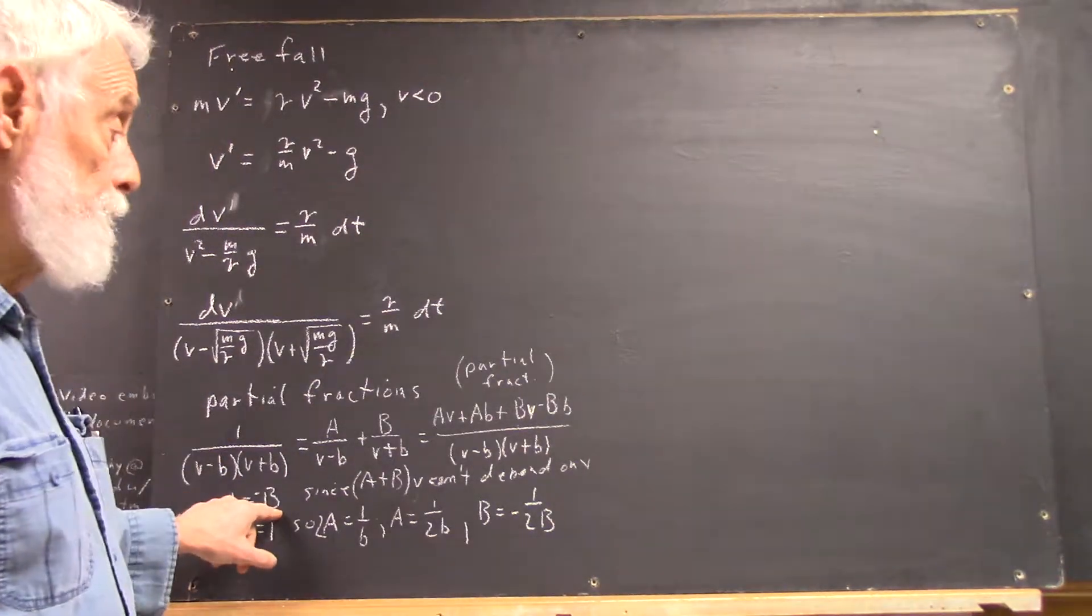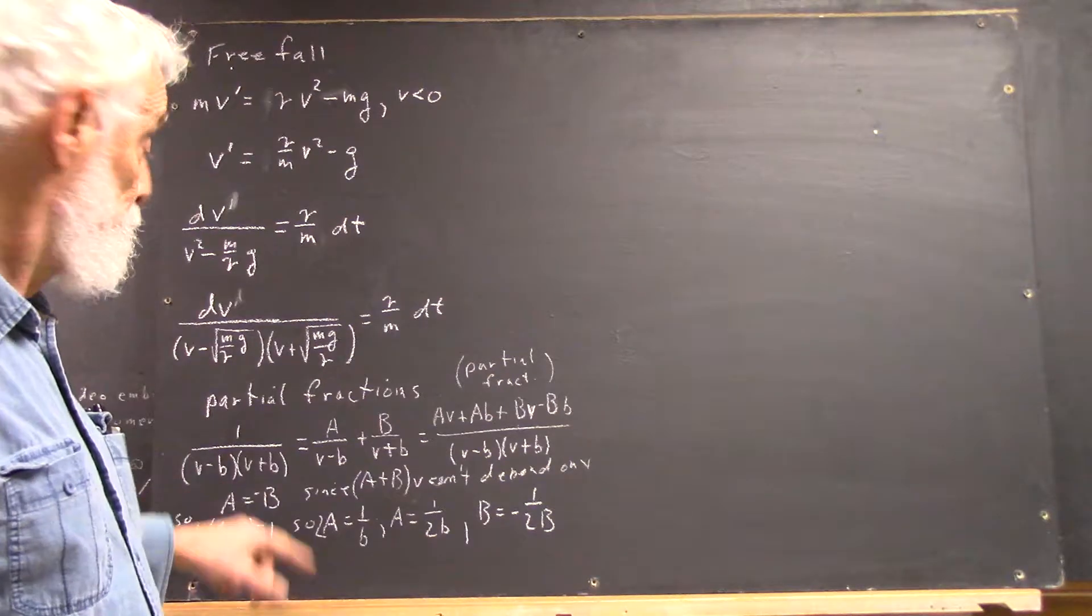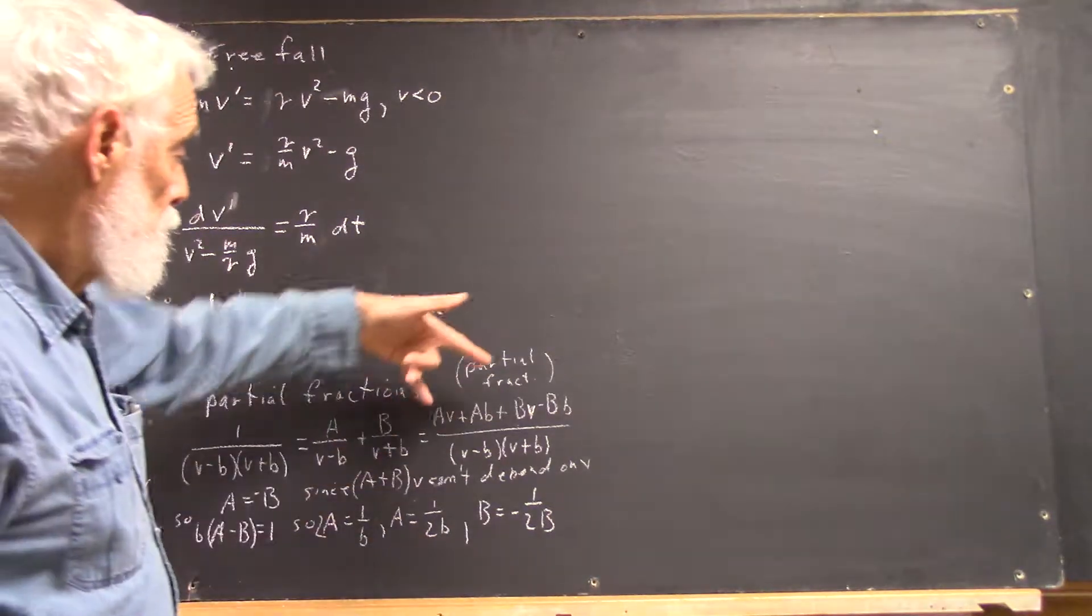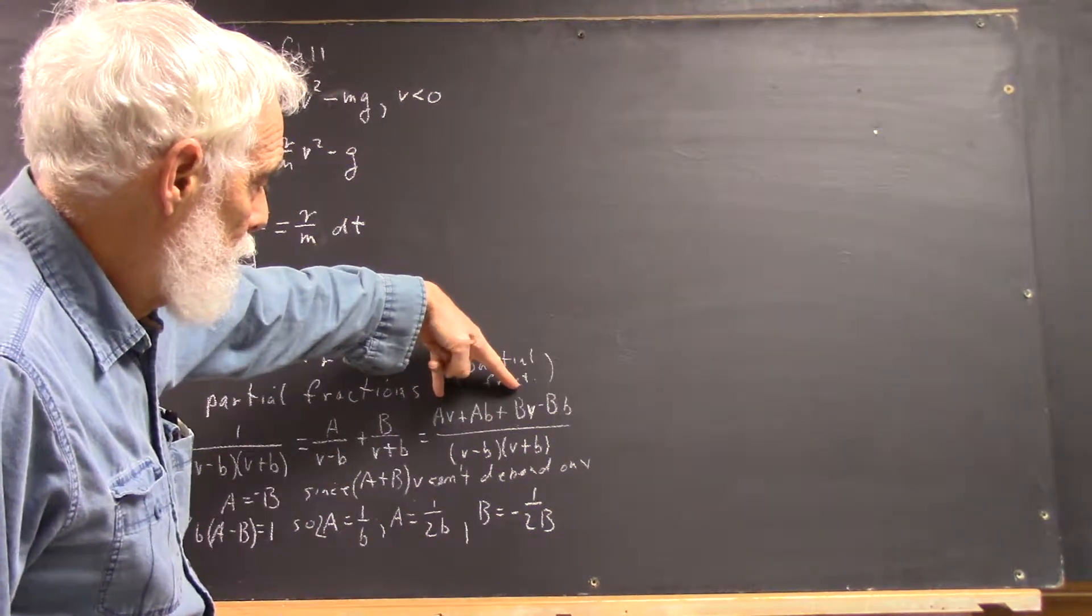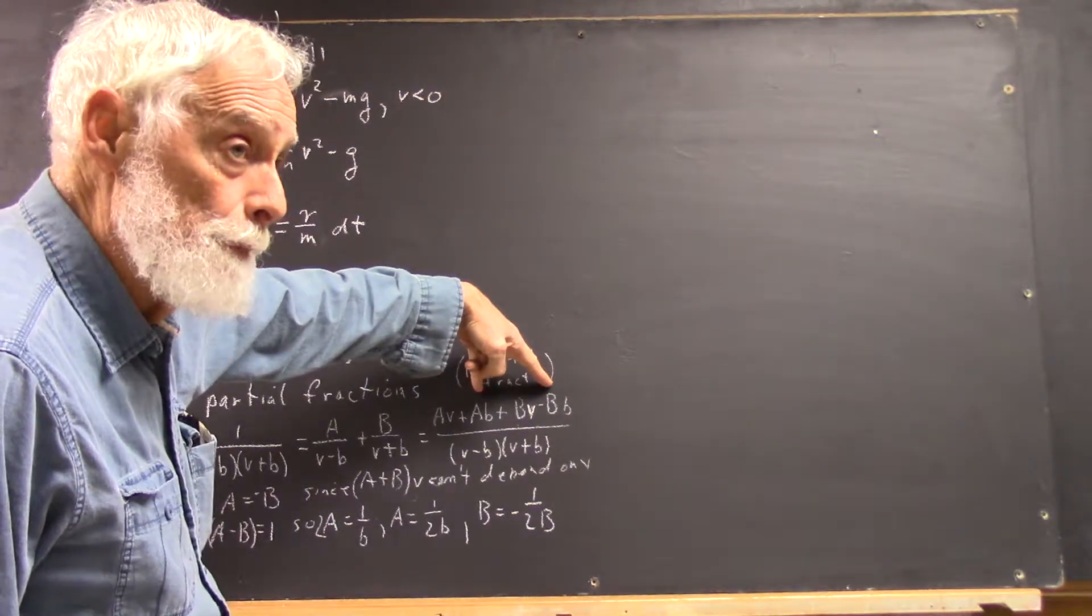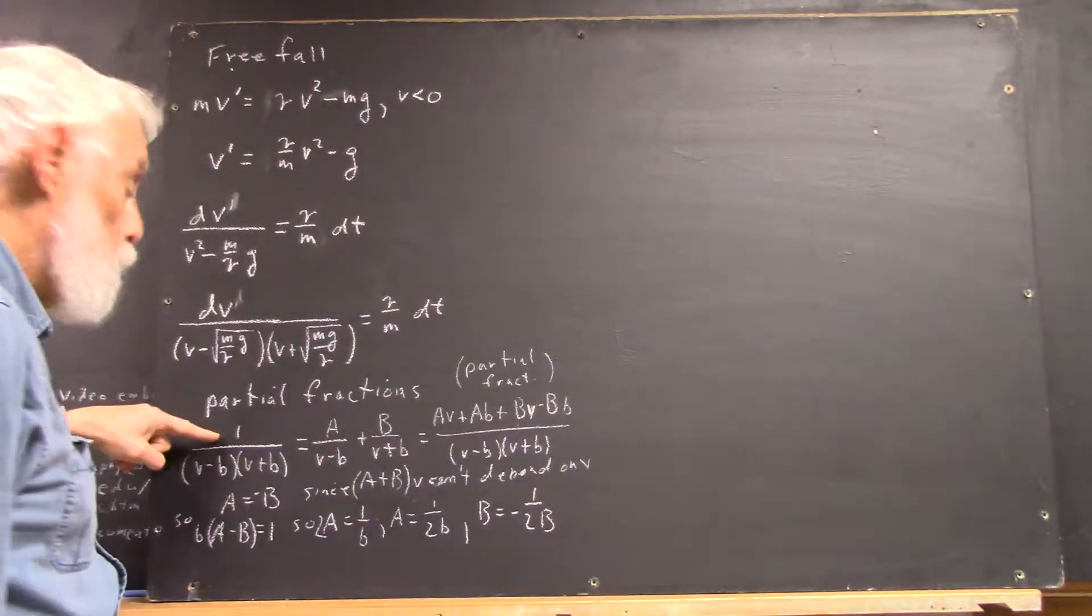That means that A has to equal negative B, obviously. So, since A is equal now to negative B, these two terms drop off, and these two terms have to add up to 1.